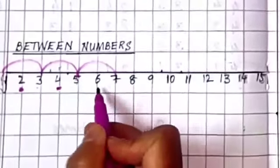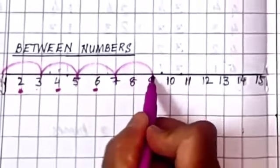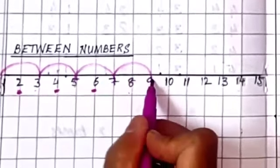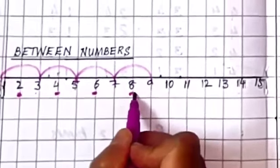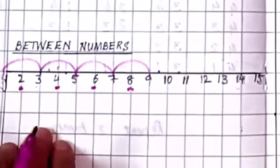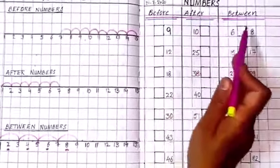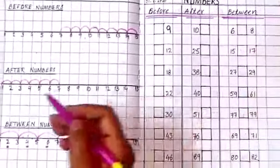5 and 7, 6 is a between number. 7 and 9, 8 is a between number. So understood children? So this is very easy now. So look here. We are doing before, after and between numbers. Okay.